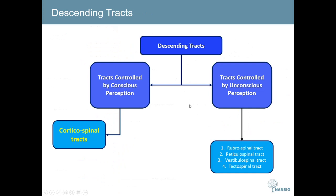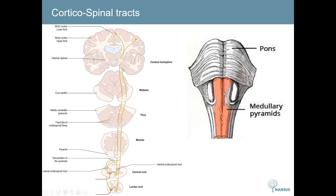Moving on to the descending tracts. These are tracts controlled by either conscious or unconscious perception. We will only be covering those controlled by conscious perception, which is the corticospinal tract. The corticospinal tract consists of two neurons: the upper and lower motor neuron. The upper motor neuron is the only part that truly travels within the central nervous system. The lower motor neuron, while originating in the central nervous system, has the majority of its course in the periphery. It originates from the precentral gyrus — the primary motor cortex — and then descends via the internal capsule.